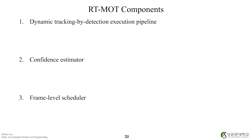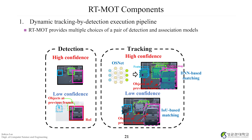Let me explain the details of: first, the dynamic tracking-by-detection execution pipeline; second, the confidence estimator; and third, the frame-level scheduler. For the dynamic tracking-by-detection execution pipeline, we have two options for detection: high confidence meaning full frame, and low confidence meaning partial important frame. For tracking, we also have two options: high confidence uses DNN-based complex approaches, and low confidence uses simple approaches that take shorter time.